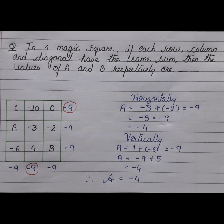Accordingly we can take out the A and B. Let us see how we can take out A. First we will see it horizontally. A plus minus 3 plus minus 2 is equal to the total which is minus 9. I will get A as minus 9 plus 5 which is minus 4.